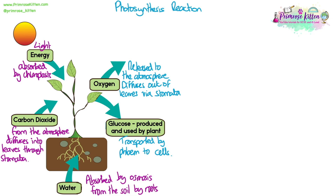Plants carry out photosynthesis using light energy absorbed from chloroplasts in the plant cells. Carbon dioxide is taken in from the atmosphere as it diffuses through the stomata into leaves. Water is absorbed by osmosis from the soil by root hair cells. This produces oxygen, which is released into the atmosphere via the stomata, and glucose, which is transported by the phloem to all cells to be used by the plant.